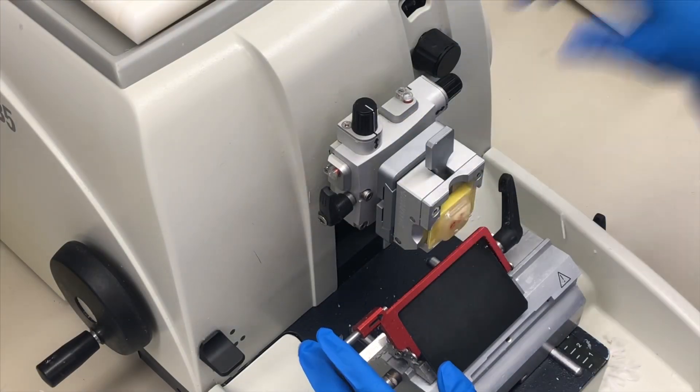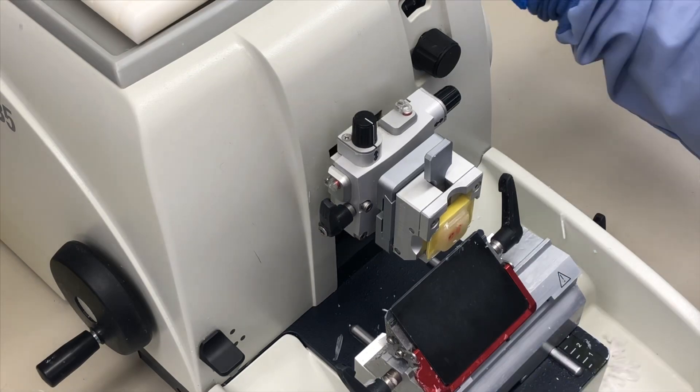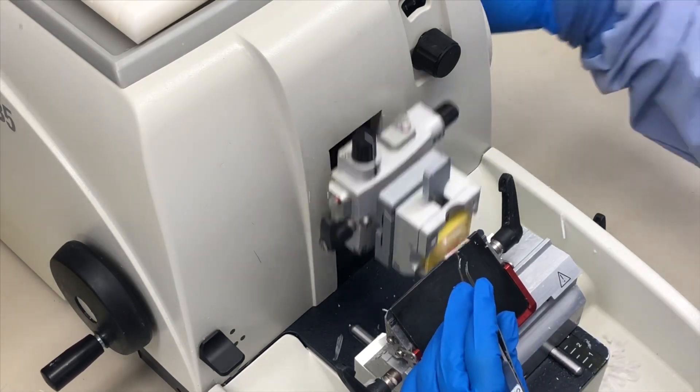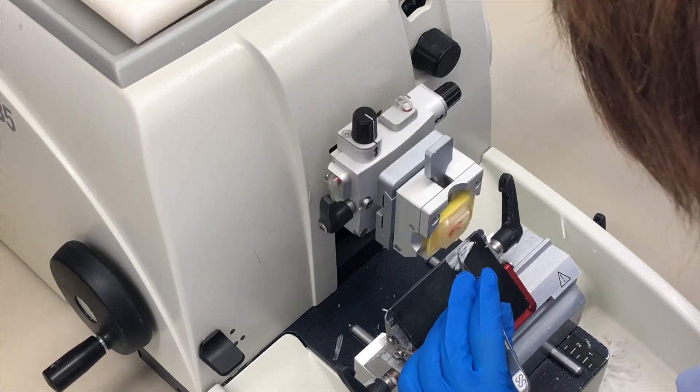Once the block is chilled, we put it into the chuck attached to the microtome. We use a sharp blade to cut sections at around three microns.